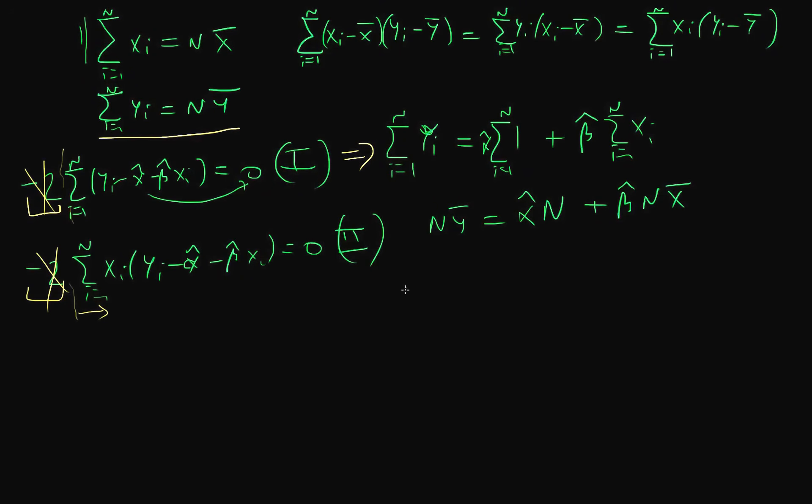On both sides of this expression I have n, so I can just cancel it. So I've got y bar equals alpha hat plus beta hat times x bar.